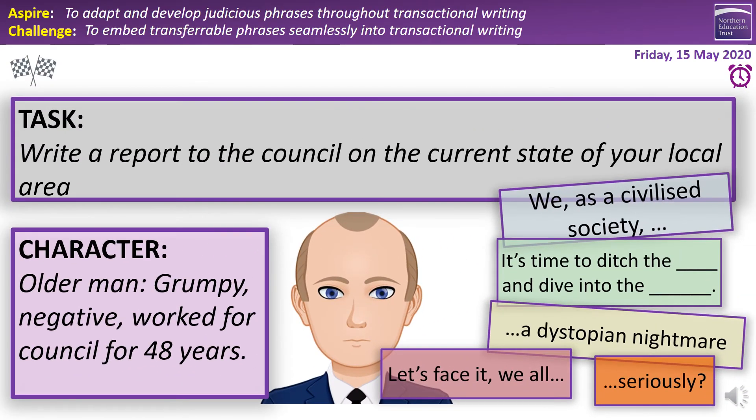Our final task: write a report to the council on the current state of your local area. That could be good or bad, but if we're writing about the state to the council, we're probably not happy. You're now an older man — grumpy and negative, but you worked for the council for 48 years. Which phrase are you going to use, and how are you going to adapt it to fit this grumpy, cantankerous, negative man writing about his local area? Two minutes — pause the recording and press play when you're finished.